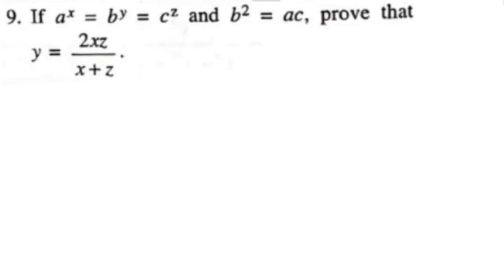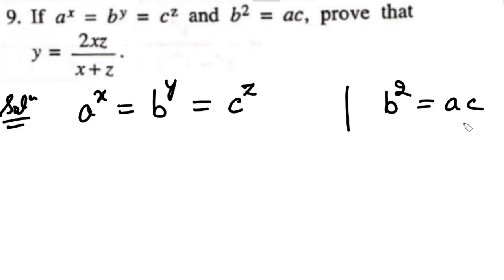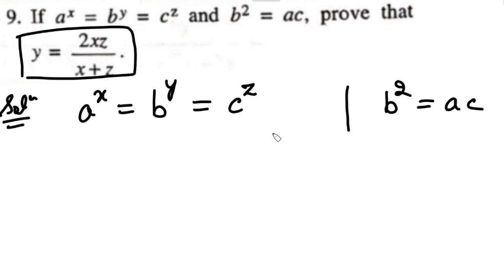Question 9 is similar to question 8. The difference is that here we are given A raised to the power X equals B raised to the power Y equals C raised to the power Z, and the second relation given is B squared equals AC. We have to prove a result using these. When three values are given equal like this, we will use the K method — we let it be equal to K.